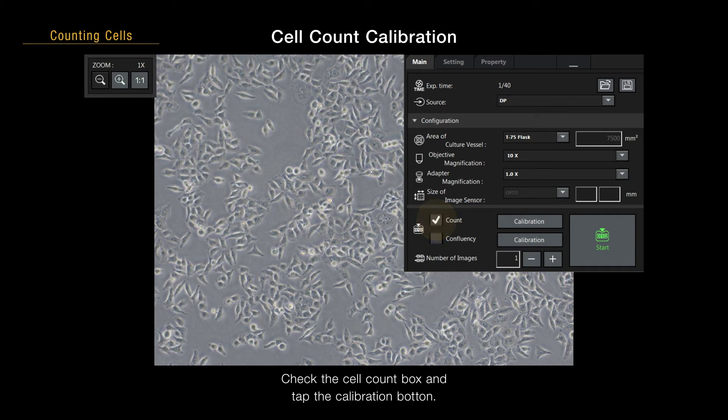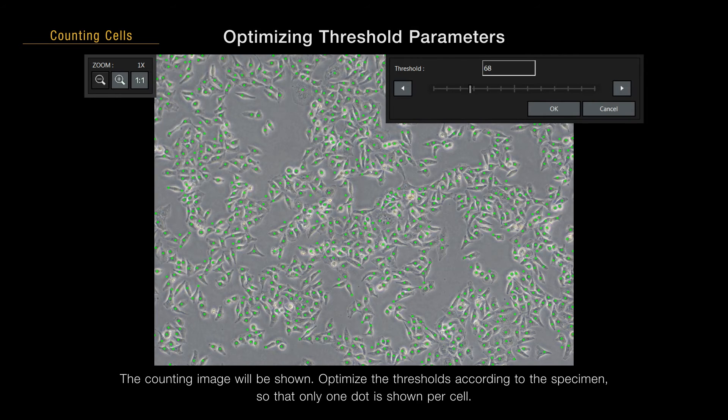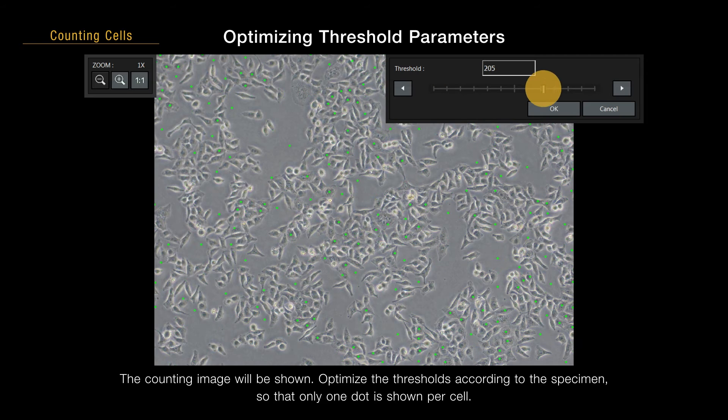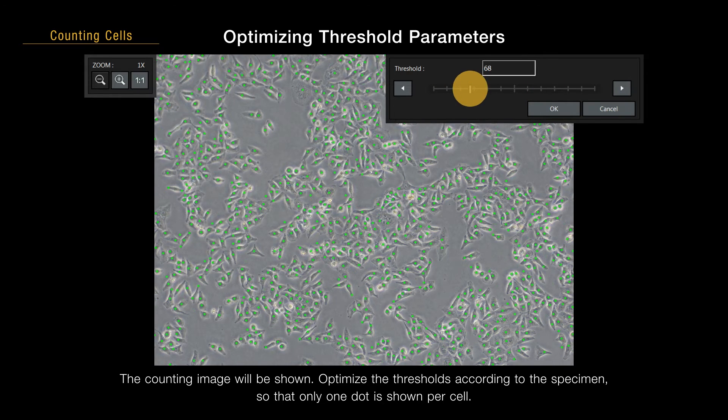Check the cell count box and tap the calibration button. The counting image will be shown. Optimize the thresholds according to the specimen so that only one dot is shown per cell.